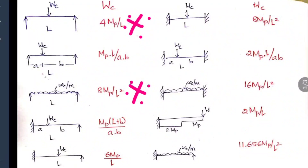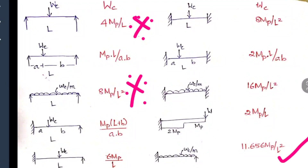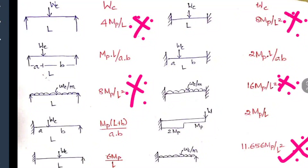For a propped cantilever with eccentric load: WC = MP(L + B) / (A × B). With a central load: WC = 6MP/L. With UDL: WC = 11.656 MP/L². For a fixed-fixed beam with a central load: WC = 8MP/L. With eccentric load: WC = 2MP × L / (AB). With UDL: WC = 16MP/L². For a fixed beam with a varying cross section, WC = 2MP/L. Study these grouped as 3 simply supported, 3 propped cantilever, and 4 fixed beam cases.